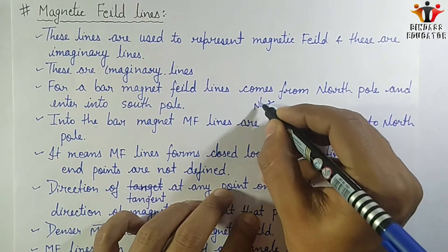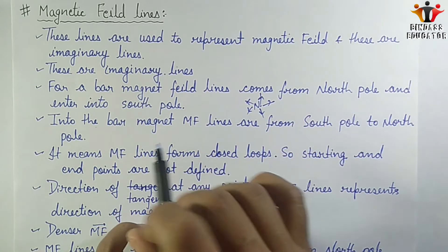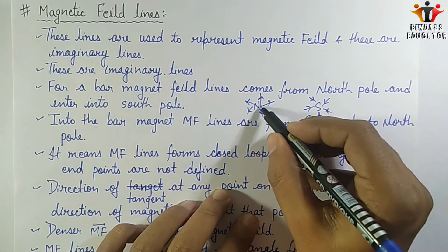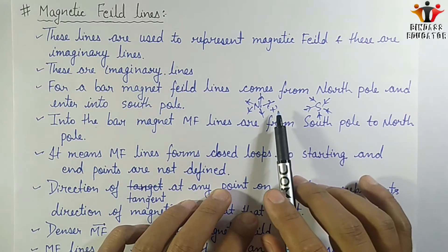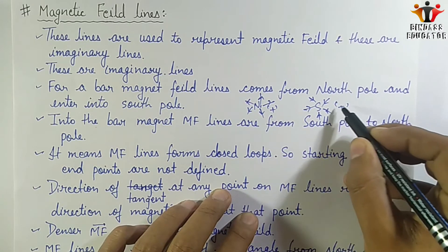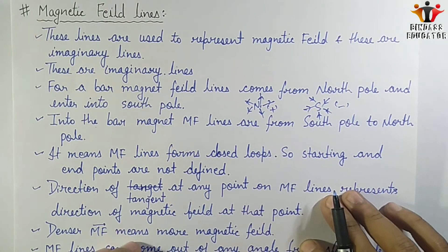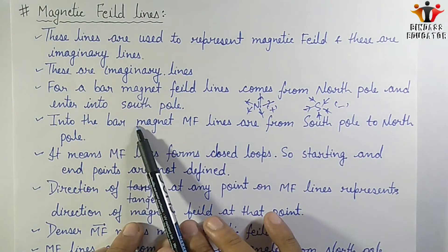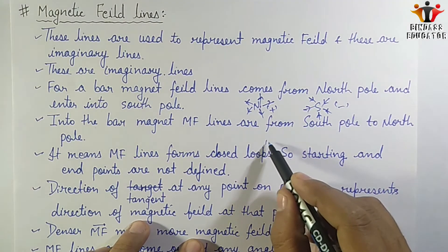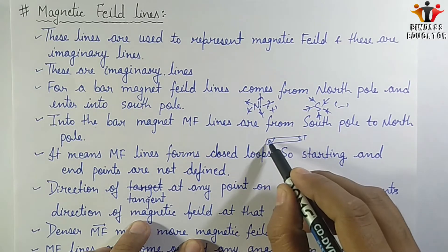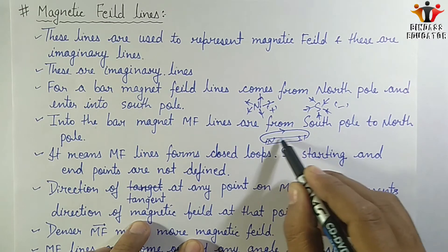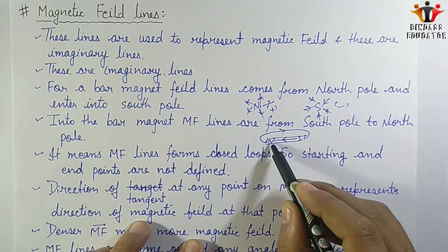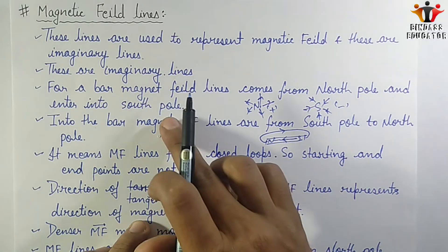Magnetic field lines originate from the north pole and enter the south pole. We can think of the north pole as analogous to a positive charge and the south pole as analogous to a negative charge — just as electric field lines go from positive to negative. Outside the magnet, field lines go from north to south. But since they must form closed loops, inside the magnet they travel from south to north.